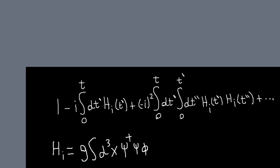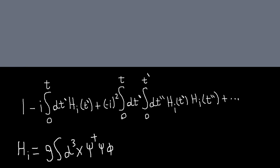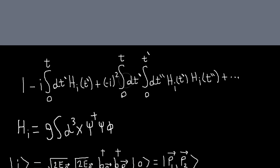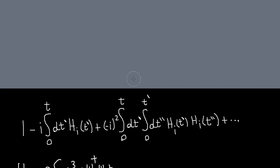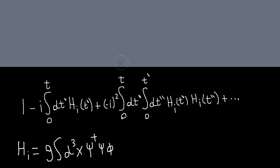In this problem, we're going to look at another example of scattering. We're working in the scalar Yukawa theory, where our interaction Hamiltonian is this, and this is our Taylor-expanded interaction matrix.